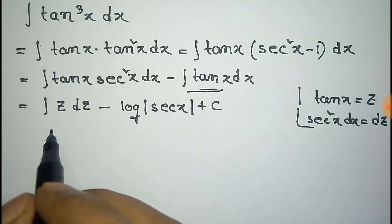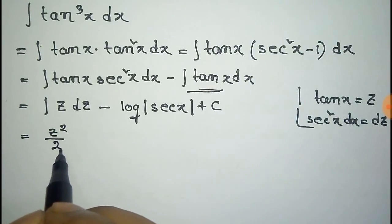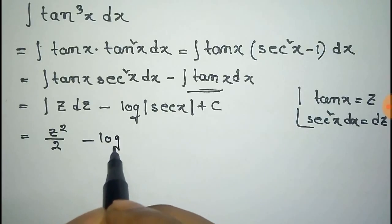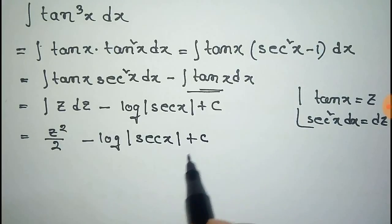Integration of z dz is equal to z² by 2 minus log of mod of secx plus a new constant c dash.